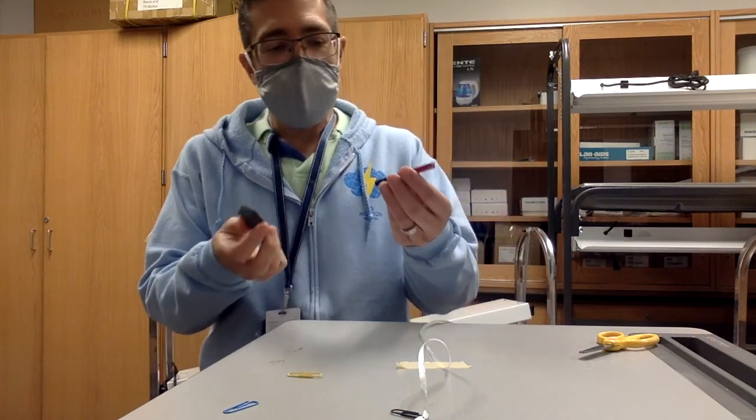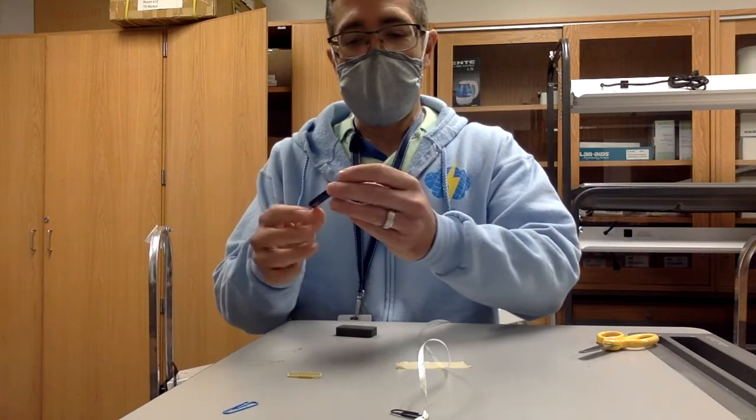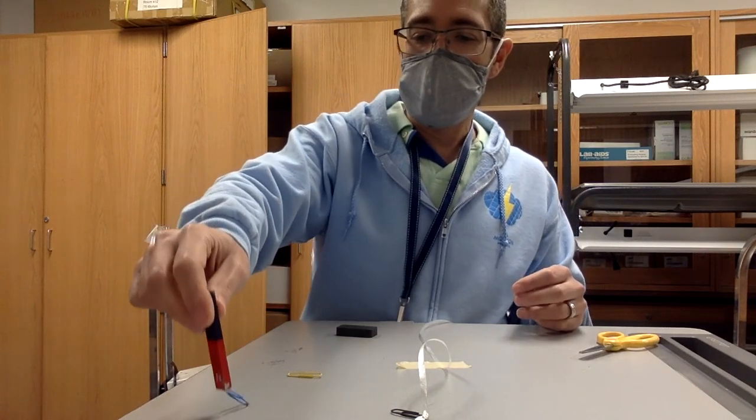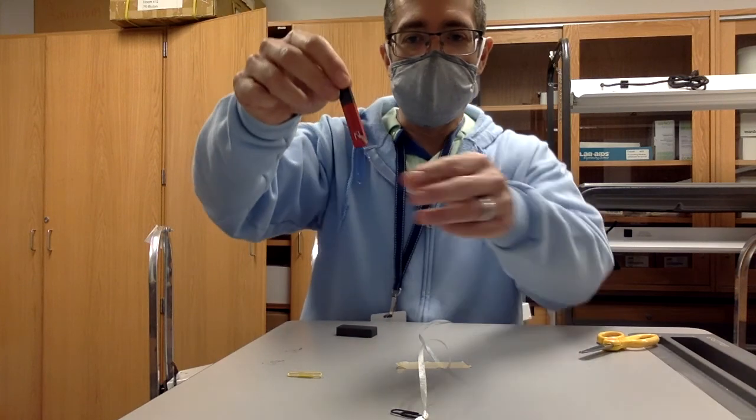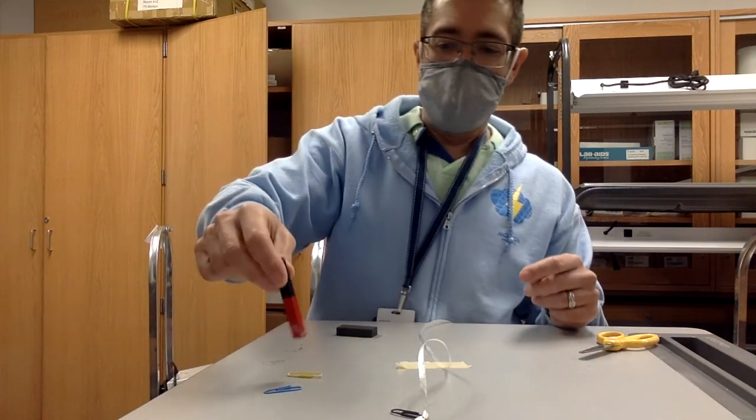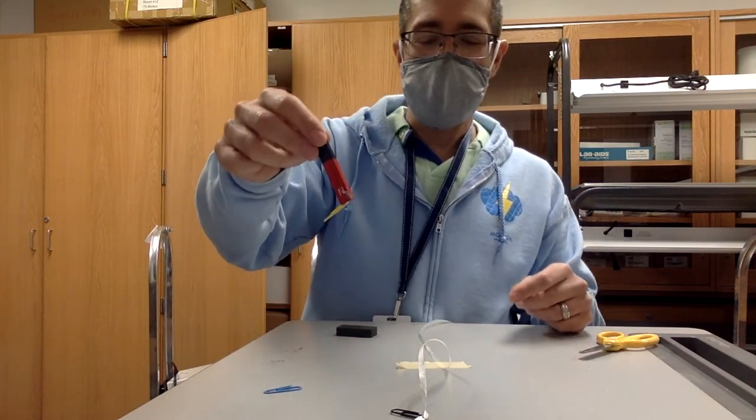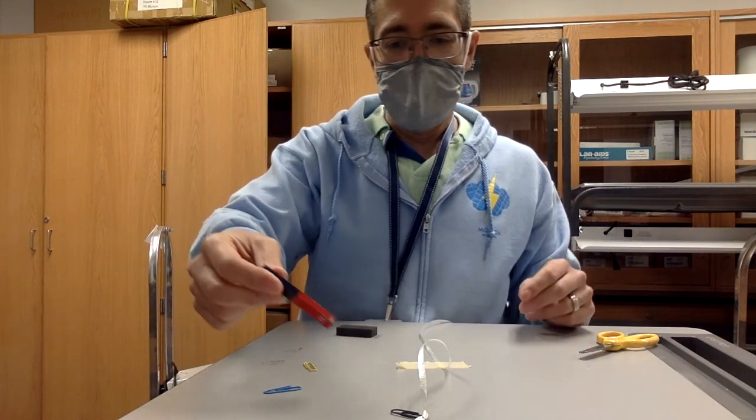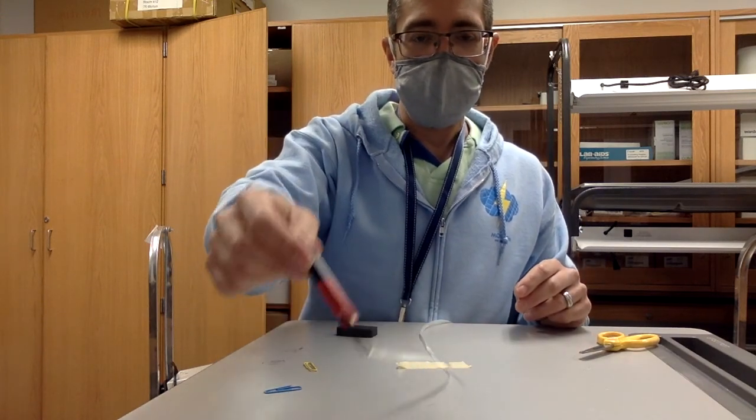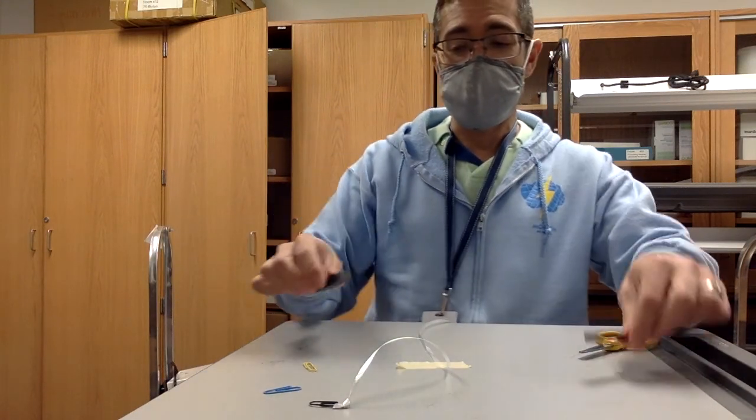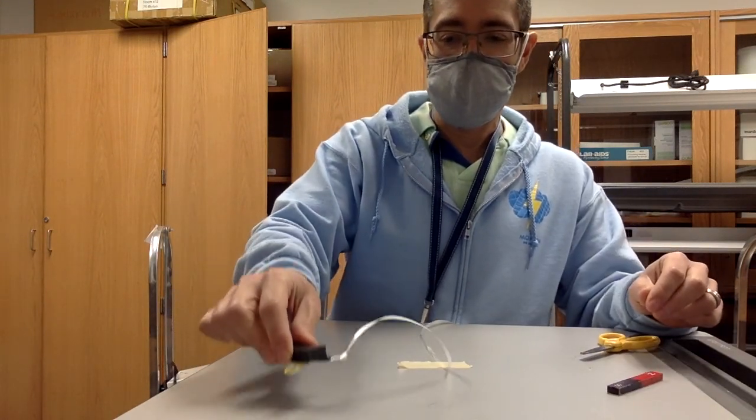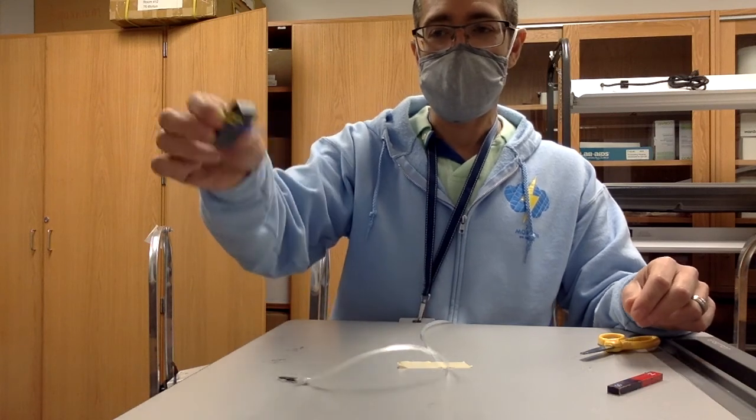So the first thing we're going to do is just see if the paperclips are attracted to the magnet. So I'm going to try this magnet here. And my blue paperclip is attracted. My yellow paperclip is attracted. I can pick it up. And the black paperclip here is attracted. So I know that these materials are attracted to magnets. And I have another magnet here also attracted to magnets.